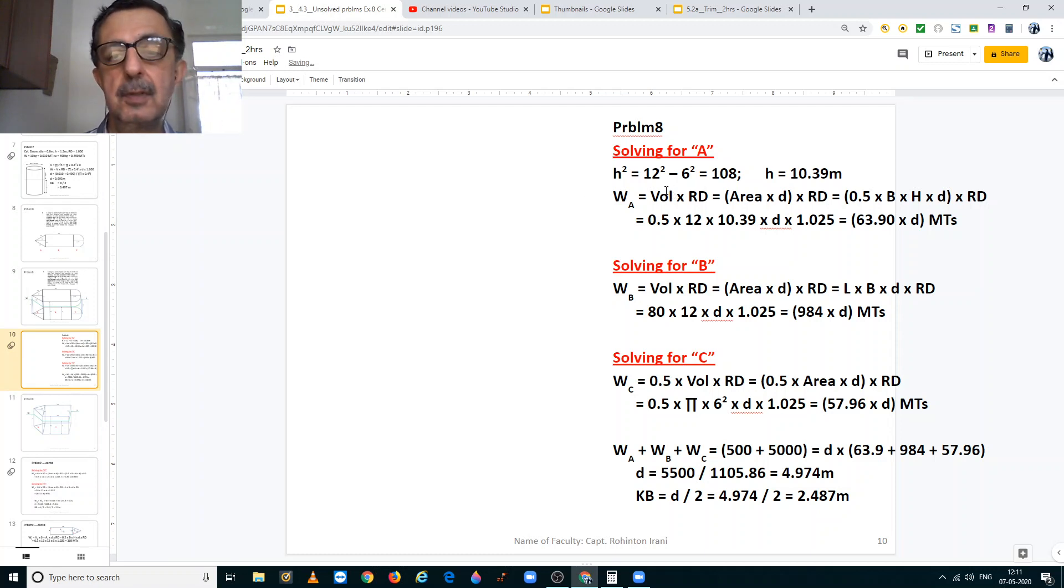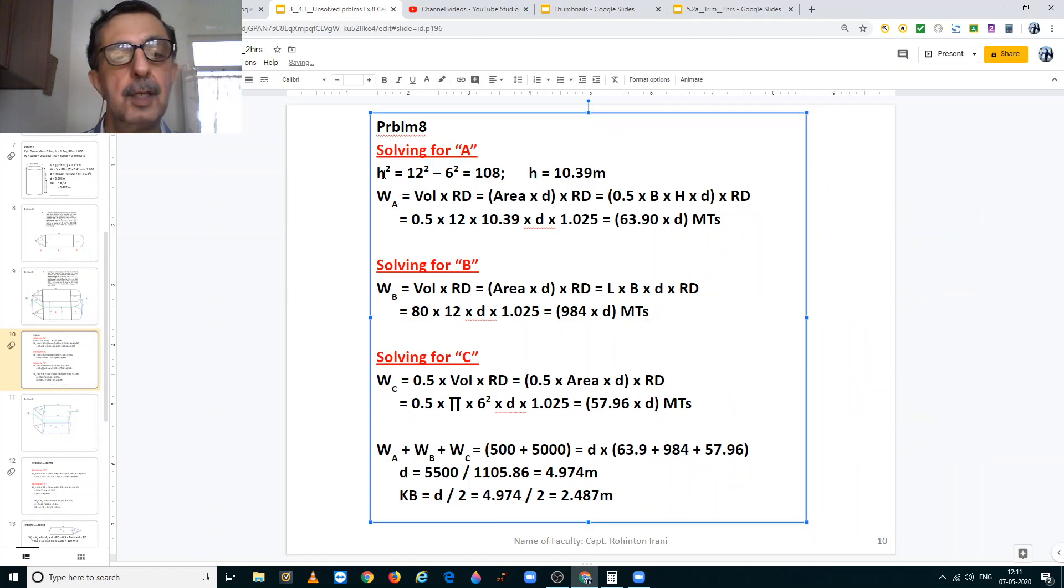And the displacement of the A section is volume into relative density. And volume below is equal to area into the draft into the relative density of the water in which she is floating. So the area of the triangular section is half base into height into the draft into the relative density. Putting in the values for the breadth which is 12 meters, and the height that we just found out over here equal to 10.39 meters, the draft is unknown factor, the relative density is 1.025. Thus we get the displacement of the A section to be 63.9 times d metric tons.